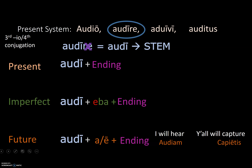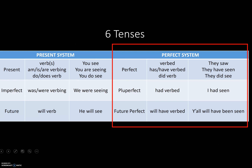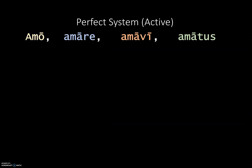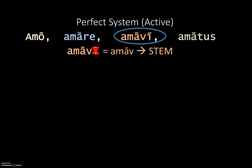Now let's review the perfect system in the active voice. For the perfect active system, we go to the third principal part, drop the I, and this gives us our perfect stem. The perfect system covers the perfect tense, the pluperfect, and the future perfect.